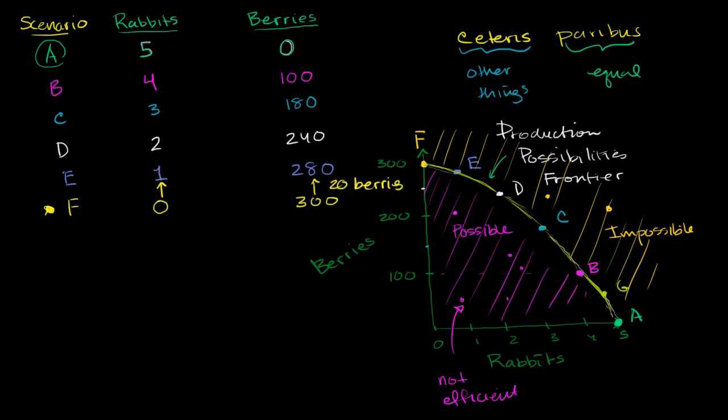Now, let's keep going. What happens if I'm in Scenario E? I'm already on average eating one rabbit or finding one rabbit a day, and I want to go to two rabbits a day. What am I going to give up? Well, now I am going to give up 40 berries. This is interesting.